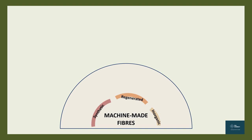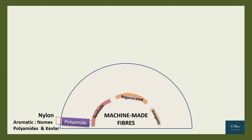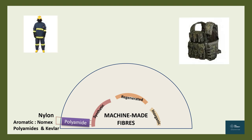Synthetic fibers are created by a process of polymerization — combining monomers to form long-chain polymers. Depending on the monomers, they are further classified as polyamides, which consist of nylon and aromatic amides. The aromatic amides have a very high melting point — Nomex is used to make fireproofing suits, and Kevlar is a very high-strength fiber used in the making of bulletproof jackets.